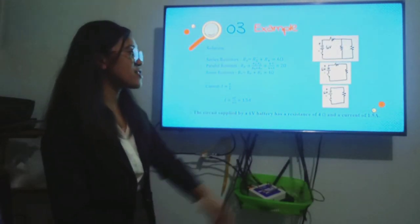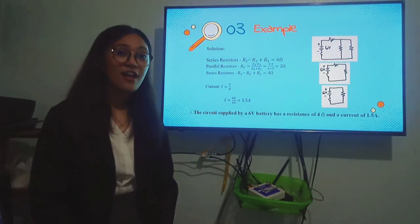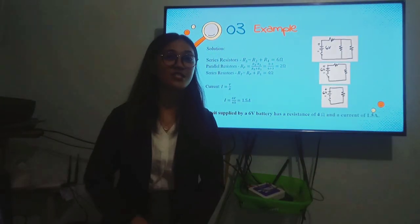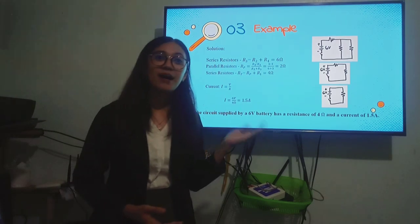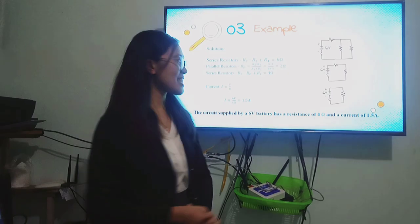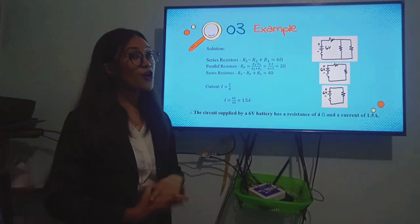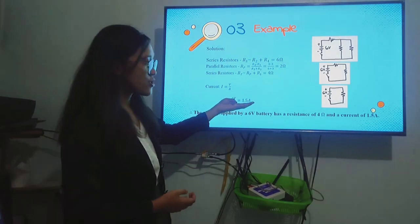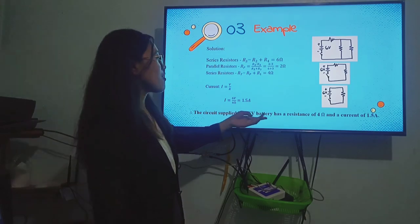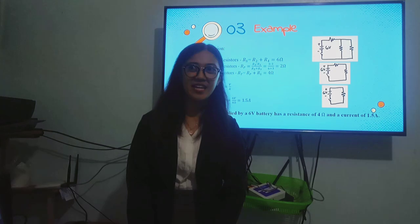Now, this is the new circuit. We only have two resistors this time. And they are in series. So we simply add 2 plus 2 is equal to 4 ohms. Now, since we have the total resistance of our circuit, we can now find the total current of our circuit. Remember, in Ohm's law, I is equal to voltage divided by the total resistance. How much is the voltage of our battery? Yes, it is 6 volts. Divided by 4 ohms, we have a total current of 1.5 amperes. Therefore, the circuit supplied by a 6 volt battery has a resistance of 4 ohms and a current of 1.5 amperes.